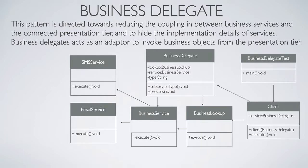Let's take an example where we have a client that will have a Business Delegate reference and an execute method. In the Business Delegate class we will have the service type and the process method that would use Business Lookup to get the execute method. We'll have a Business Service interface that will be implemented by both SMS service and email service. Each service will implement the actual business logic, and we have a Business Delegate test class that will have the main method.